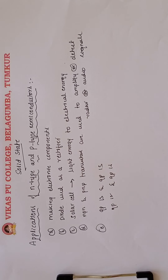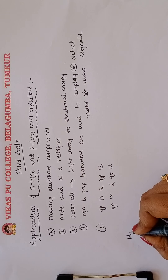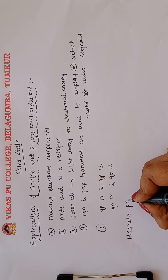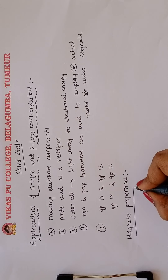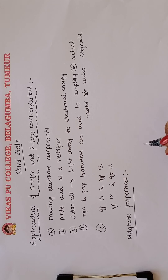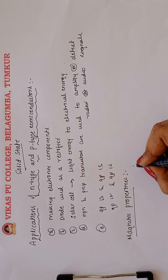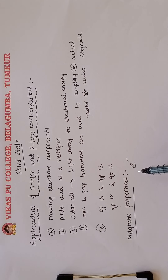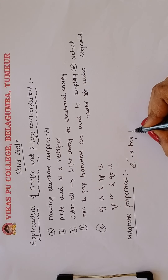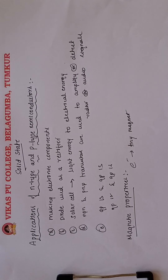Now we are going to be discussing about the magnetic properties. Every substance has some magnetic properties associated with it. The origin of these magnetic properties is due to the electrons, and each electron in an atom behaves like a tiny magnet.